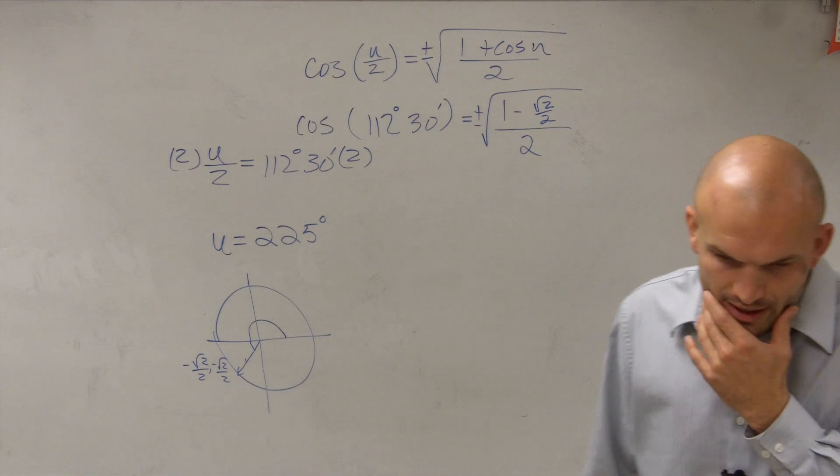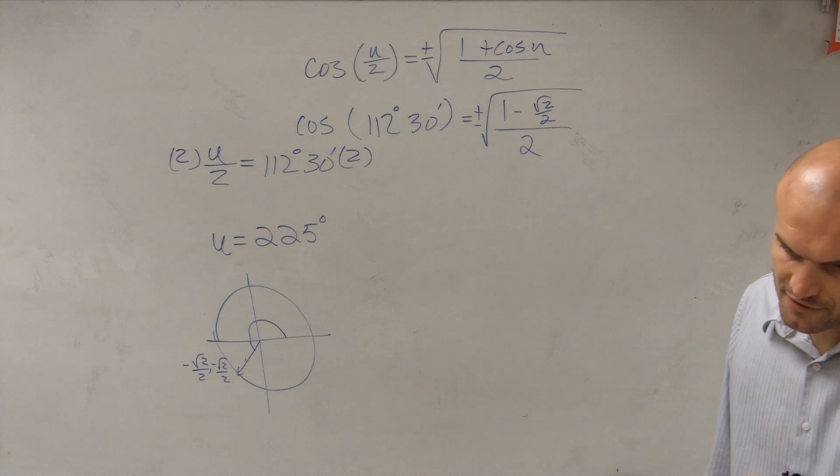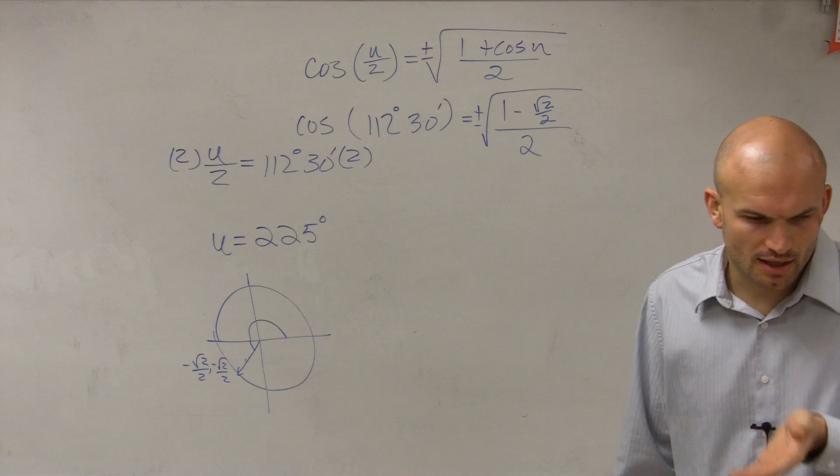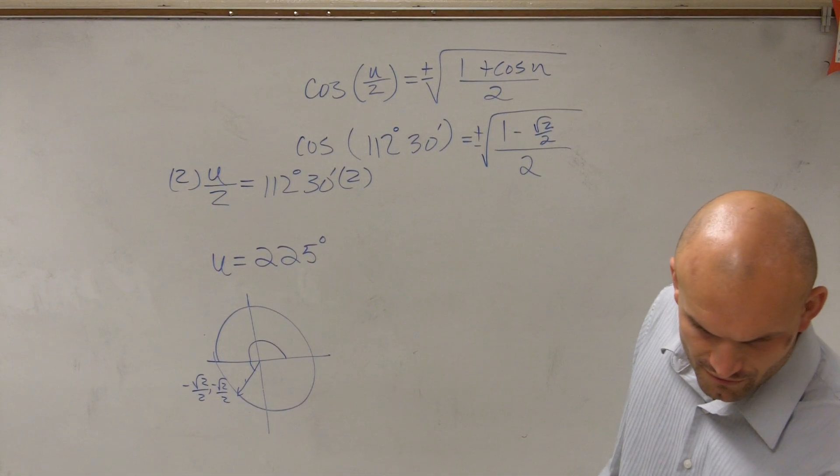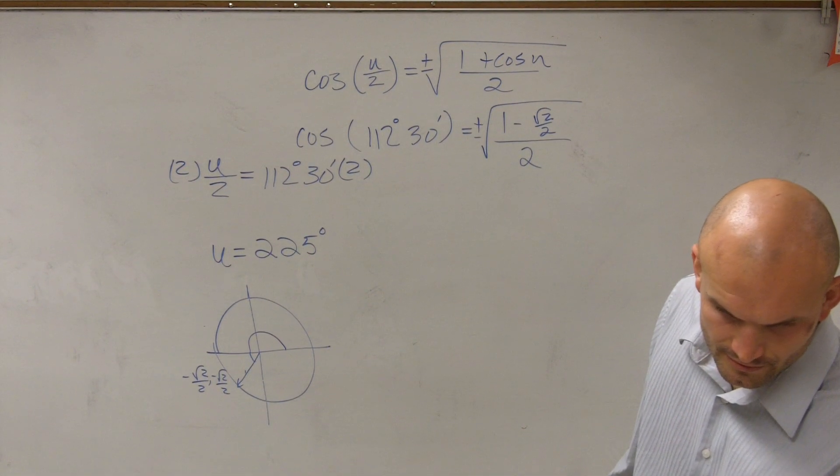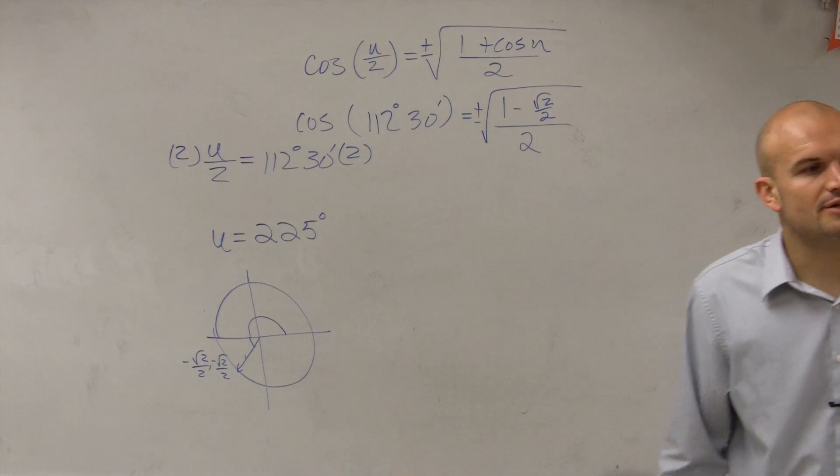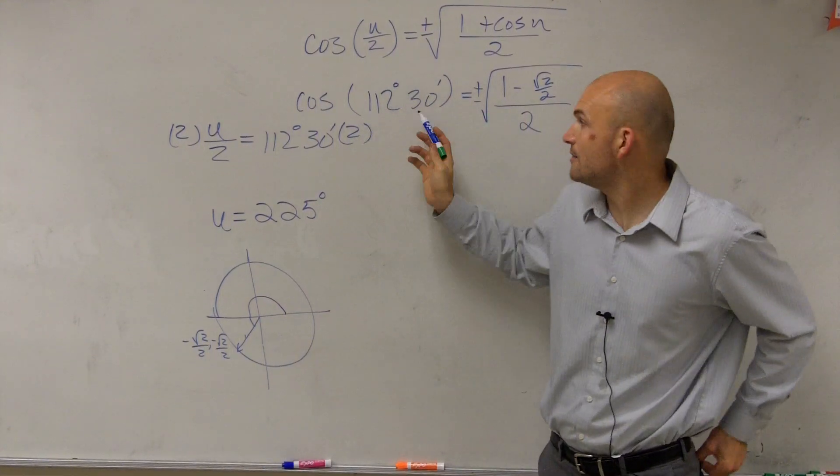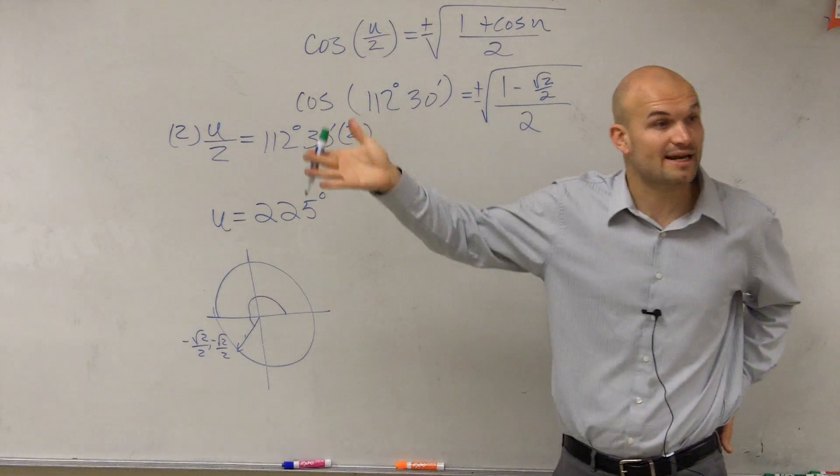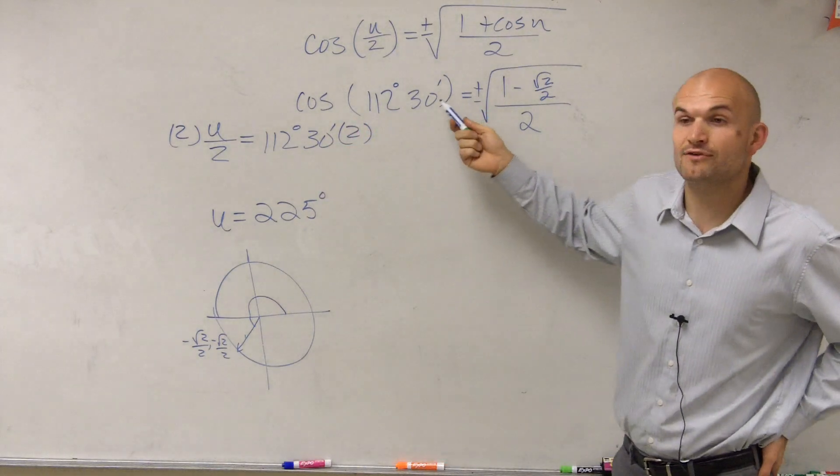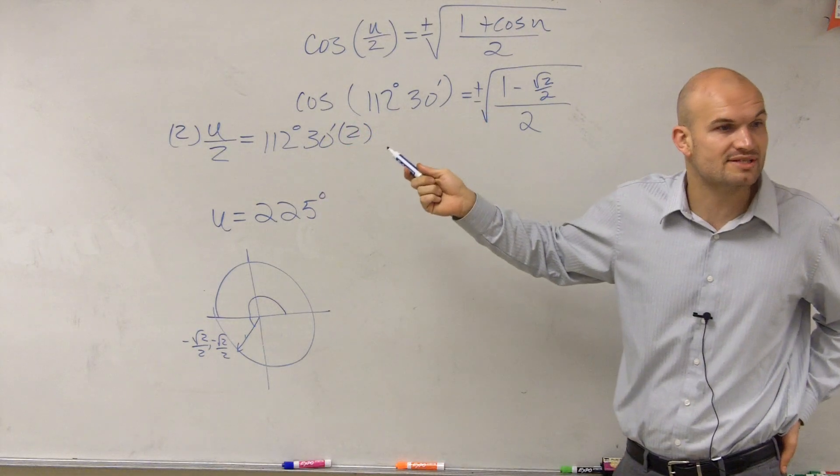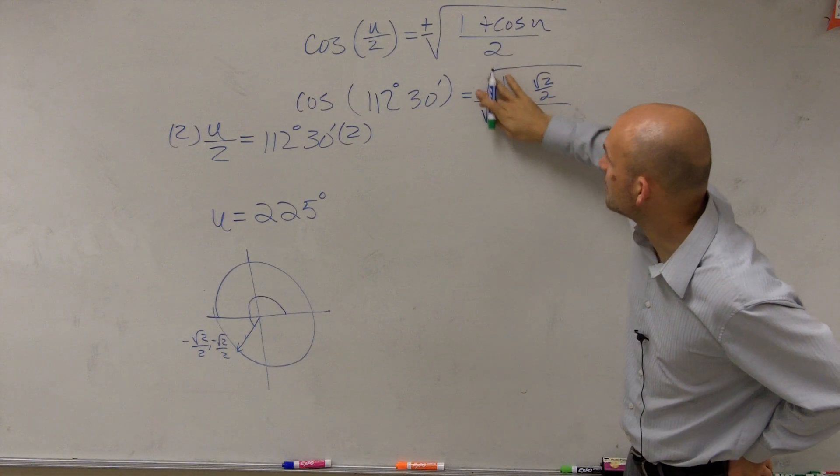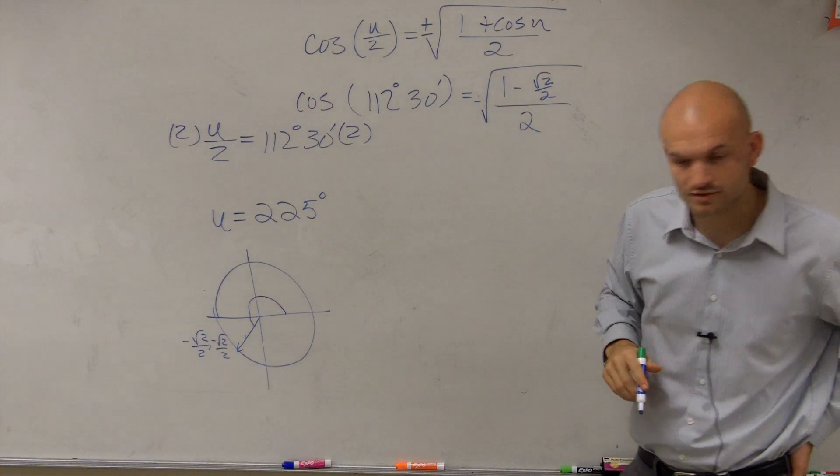Now, again, for this problem, what we want to make sure that we're going to do is, which one was I doing? I was doing 43, right? OK. What we want to make sure that we're going to be doing for this problem is understand where our angle's at. So our original angle, 112 degrees and 30 minutes, that's going to be in the second quadrant. And since we're evaluating for cosine, is cosine positive or negative in the second quadrant? Negative. So rather than doing the plus or minus, we're just going to be concerned about the negative value of the square root.